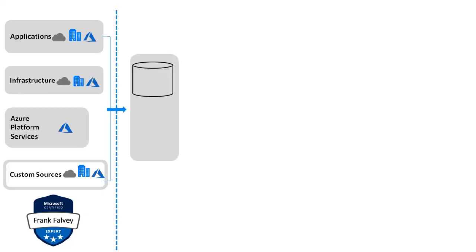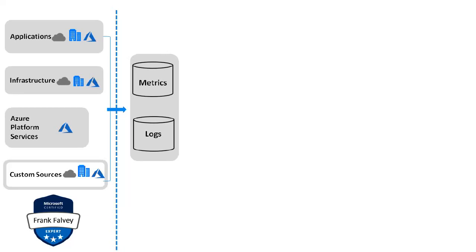Next up we have metrics and logs. All the data collected by Azure Monitor fits into one of two fundamental types: metrics and logs. Metrics are numerical values that describe some aspect of the system at a particular point in time. They are lightweight and capable of supporting near real-time scenarios.